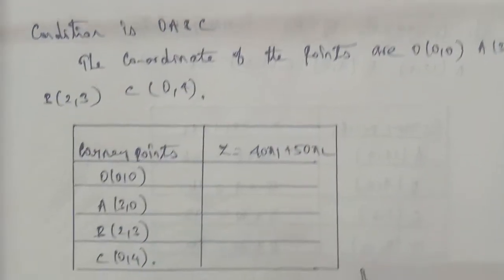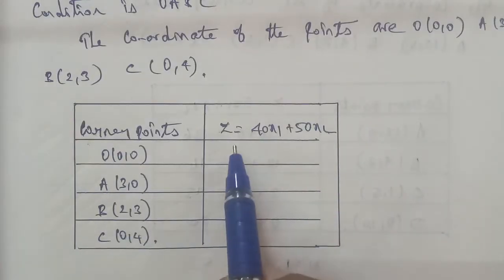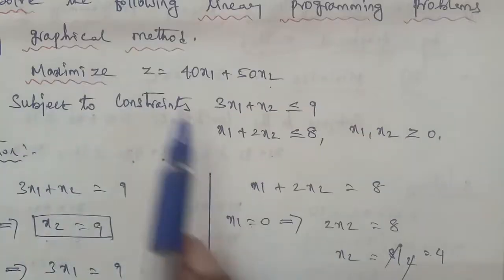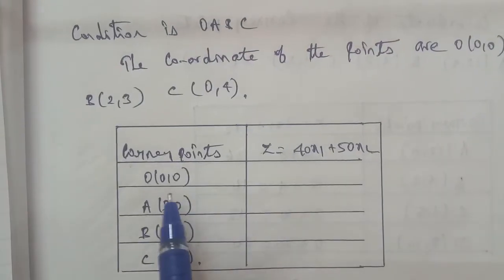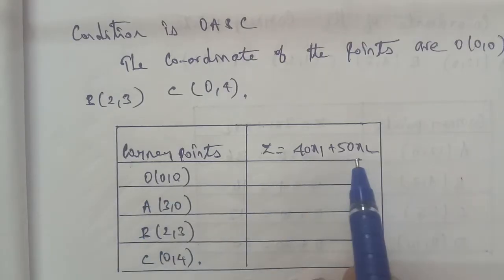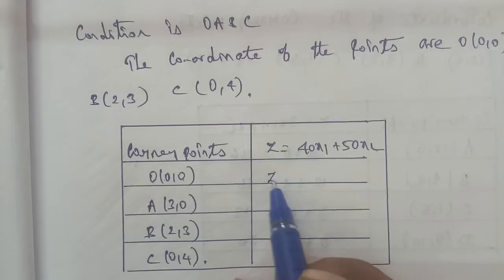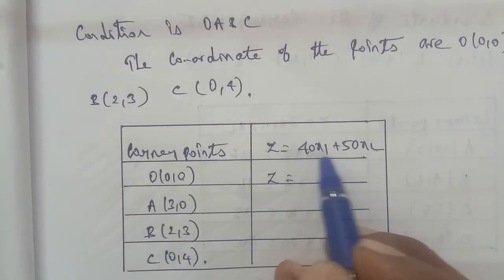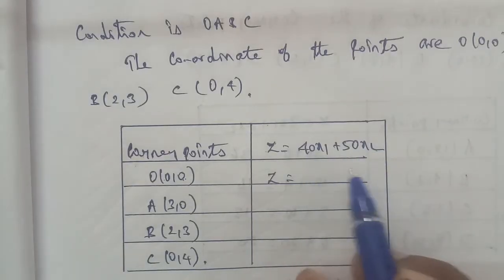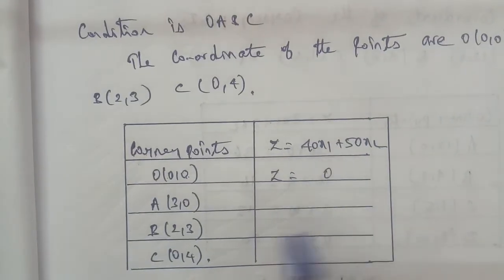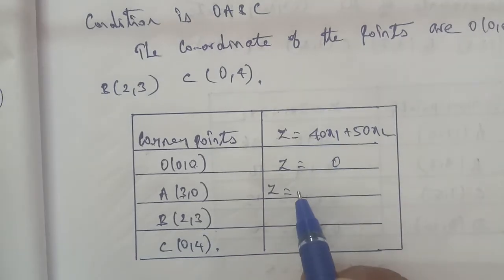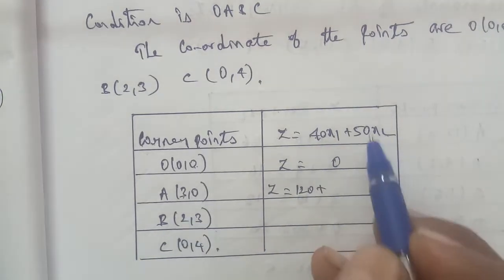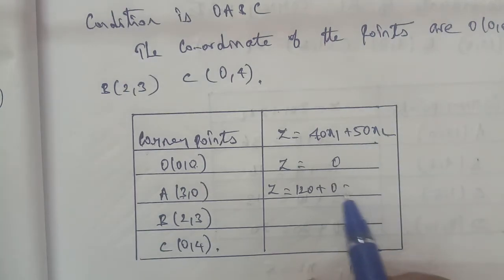Next, the table columns: corner points and Z is equal to 40x1 plus 50x2. Starting with the corner points: at (0,0), x1 equals 0 and x2 equals 0, so Z equals 40 into 0 plus 50 into 0, total is 0 plus 0, Z equals 0. Next, at (3,0), x1 equals 3, so 40 into 3 equals 120, plus x2 equals 0, so 50 into 0 equals 0. Total Z equals 120.